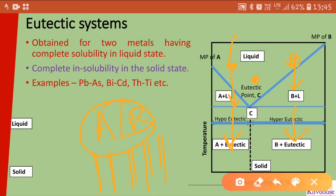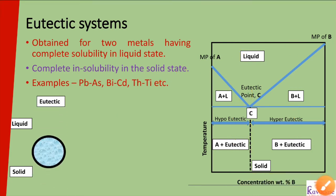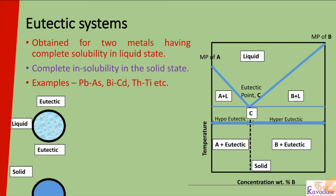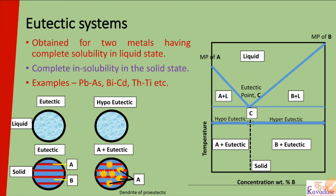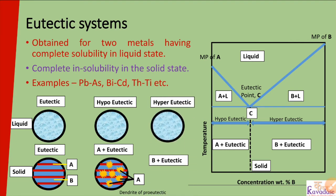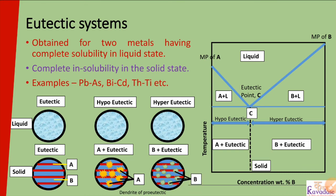When we cool metal from point C, we directly get solid metal in alternating A-B layer form. These are the three ways we get the eutectic type of system. At point C, liquid is converted directly into solid eutectic, where metal A forms lines and metal B forms the shaded regions. In the hypo-eutectic region, you get dendrites of A and then eutectic mixture A plus B.